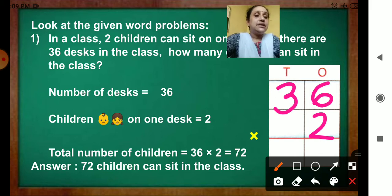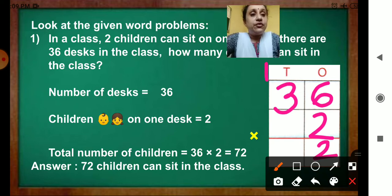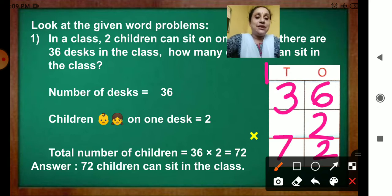36 multiplied by 2. So, we will start. 2 sixes, how much? 12. You will write 2. 1 will be carried over to the tens place. Now, 2 threes are 6. 6 plus 1, 7. Total number of children equal to 36 multiplied by 2 equal to 72. So, the answer is 72 children can sit in the class.